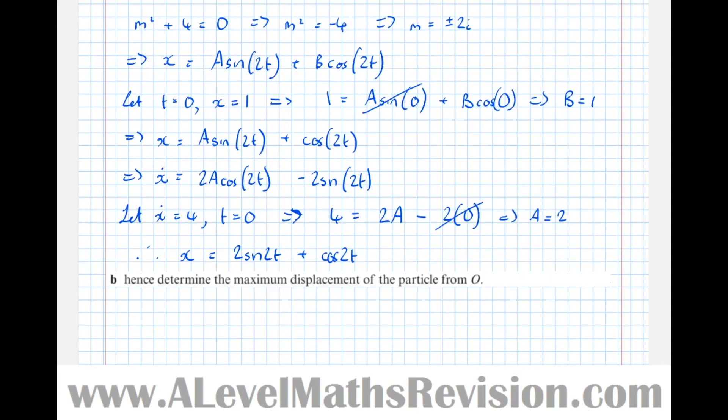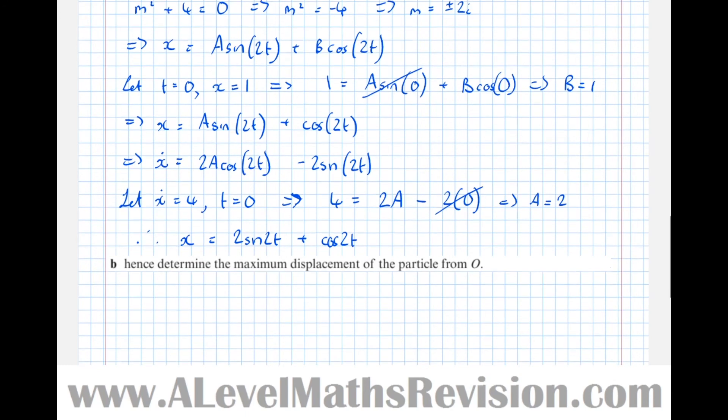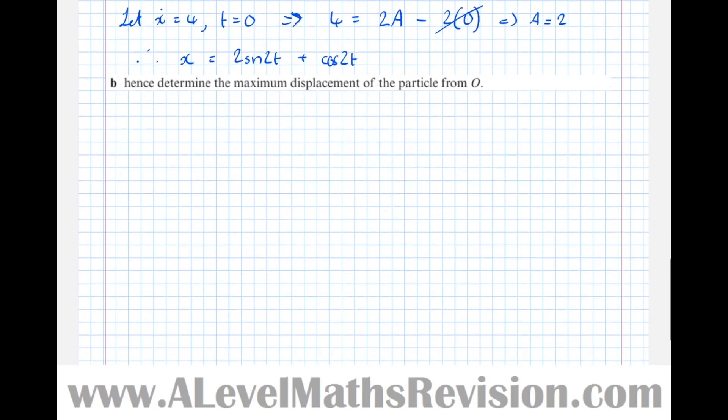To remind ourselves what part b asked, it said hence determine the maximum displacement of the particle from O. We could differentiate and set equal to 0, but that would be quite difficult. An easier thing to do is to use the compound angle formulae to combine these two terms into a single term. If we try and combine it into sine of 2t plus alpha with some constant at the front...